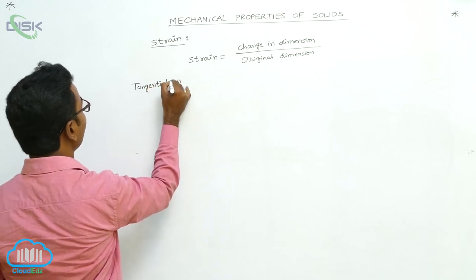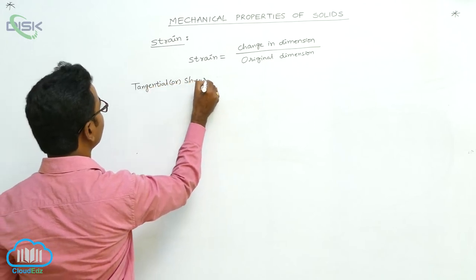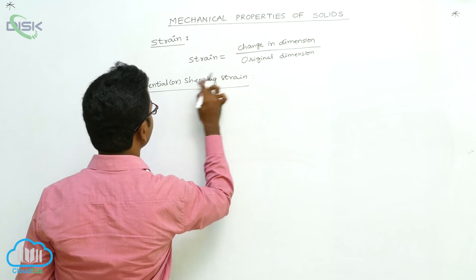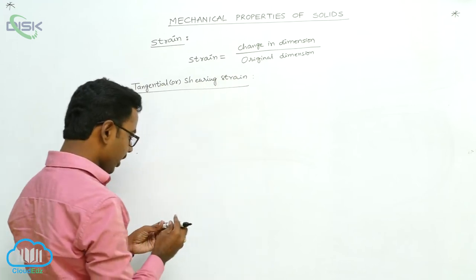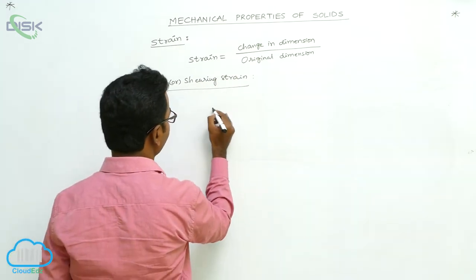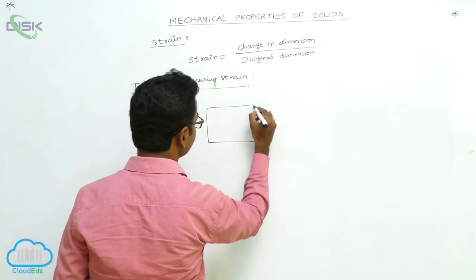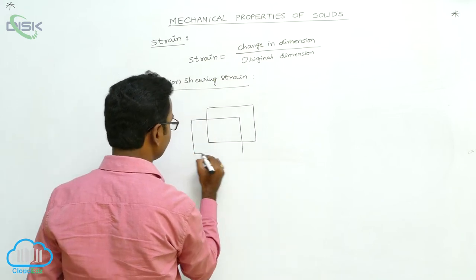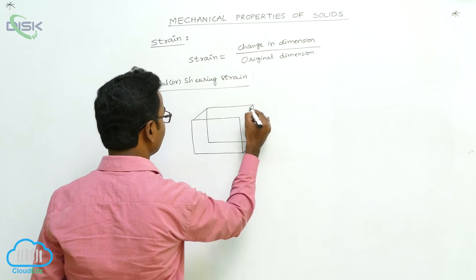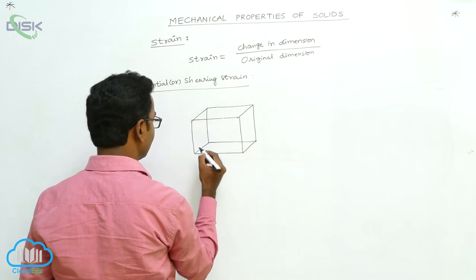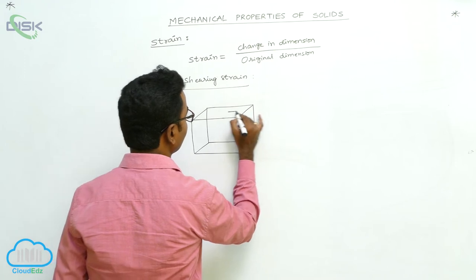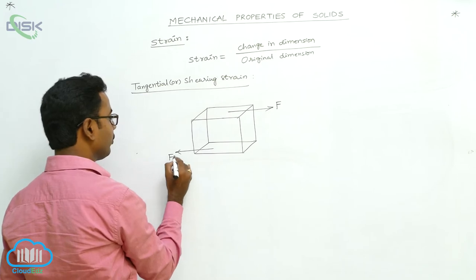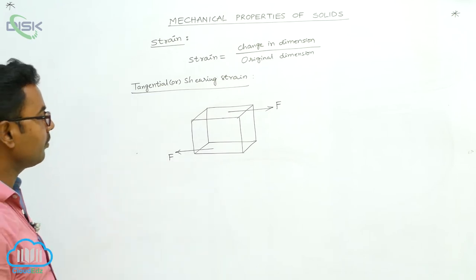Tangential or shearing strain — we can understand this by taking a cube. On the top surface and on the bottom surface, we apply two equal forces F in opposite directions, so that the top surface is displaced.